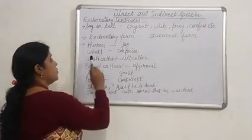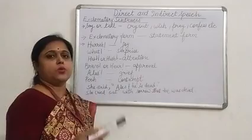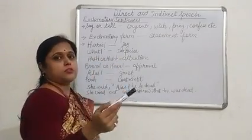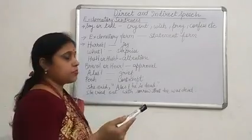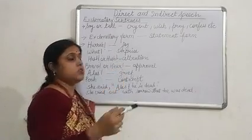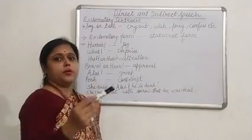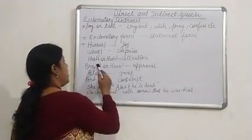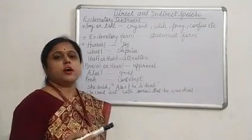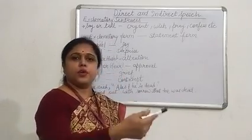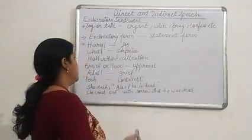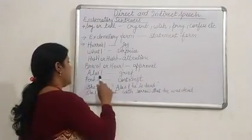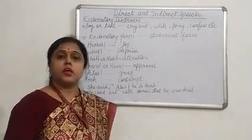The third rule: certain exclamatory words express specific feelings. For example, 'hurrah' expresses joy or happiness. 'What' — as in 'what a beautiful building it is' — expresses surprise. 'Hush' or 'hash' shows a type of calling attention from the person being spoken to. 'Bravo' or 'hear' shows approval. 'Alas' expresses sorrow or grief, so we write 'grief' or 'sorrow' in place of 'said to' or 'tell'.